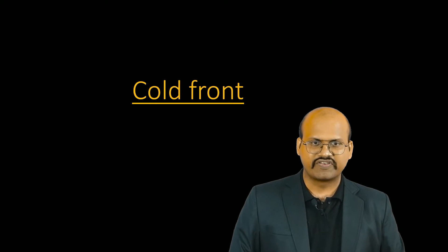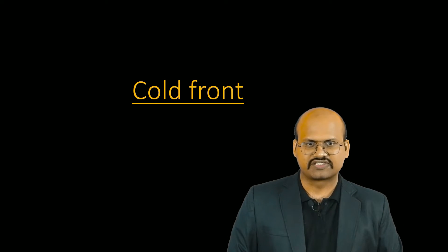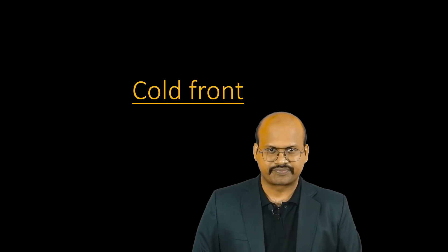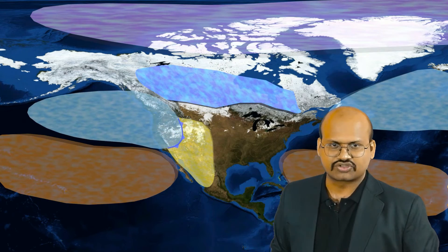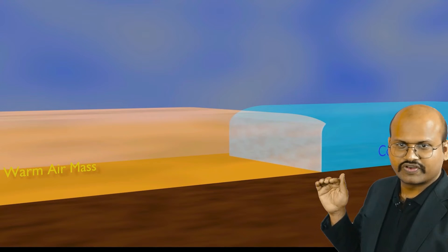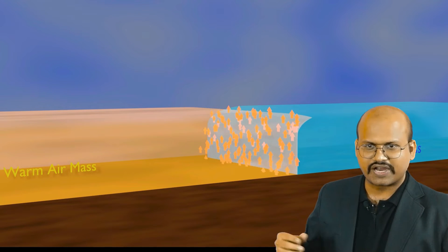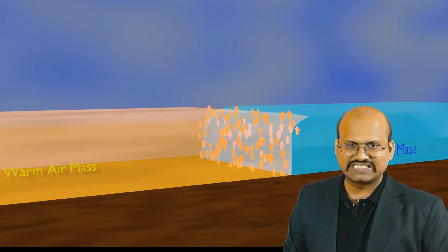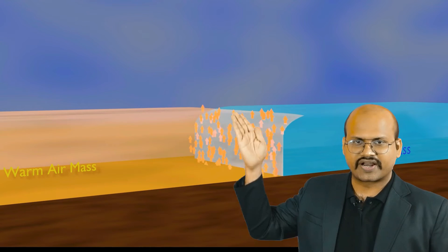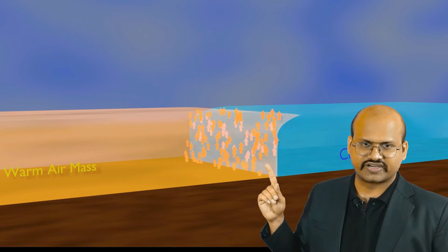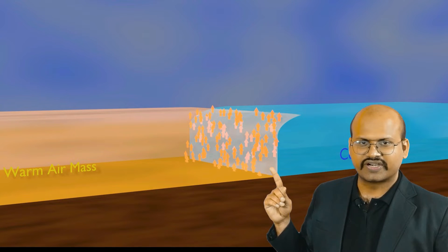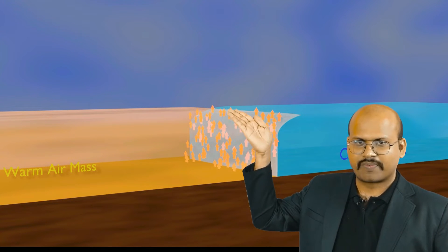Now we will discuss the fronts in detail. The first front is the cold front. In our previous video we have seen that when a cold air mass tries to replace warm air mass it is called cold front. Here in this example we have a cold air mass moving and replacing the warm air mass. Because this cold air mass is very heavy compared to the warm air mass, it is easily able to uplift the warmer air. At this cold front we see rapid rise of warm air.